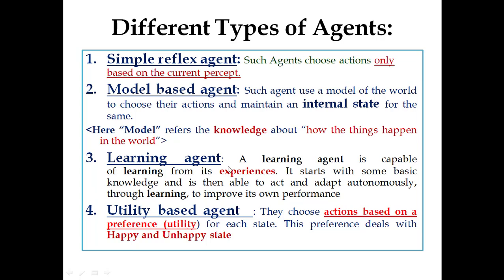Then the learning agent. A learning agent is capable of learning from its experience. It starts with some basic knowledge and is then able to act and adapt autonomously through learning to improve its own performance. The learning agent works on the principle of experience, and whenever new conditions or new percepts come, it adopts them and works upon the actions through actuators accordingly.